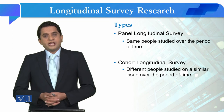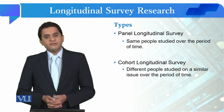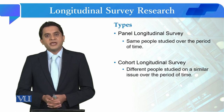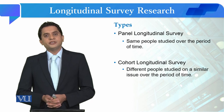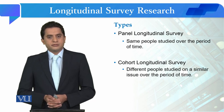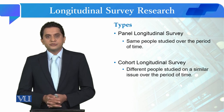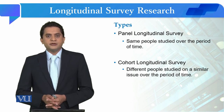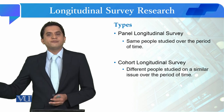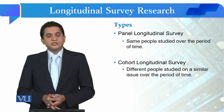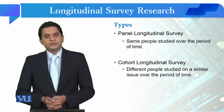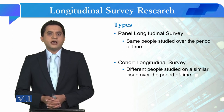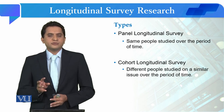There are two types: panel longitudinal surveys and cohort longitudinal surveys. In a panel longitudinal survey, the same people are studied repeatedly. For example, if you have a group and you collected data from them in 2020, then in 2022, and again in 2024 — those are the same respondents. This is called a panel longitudinal survey.